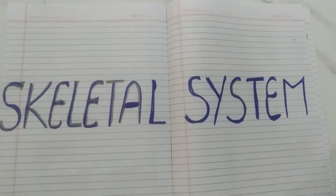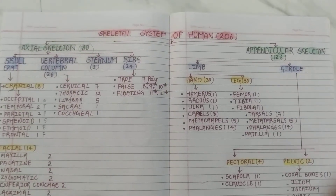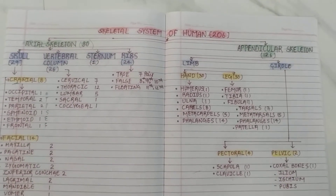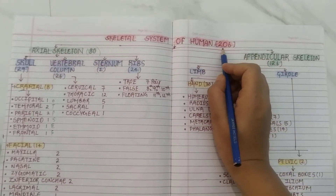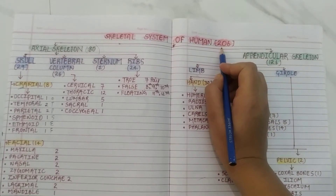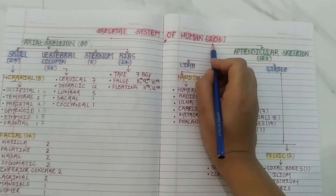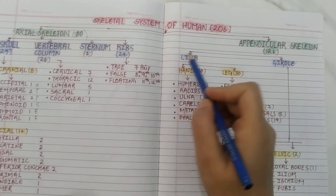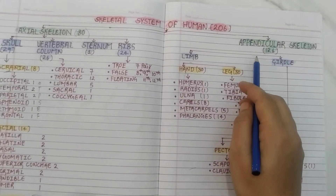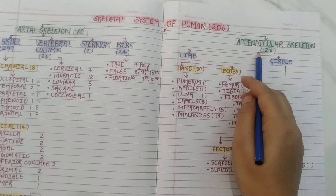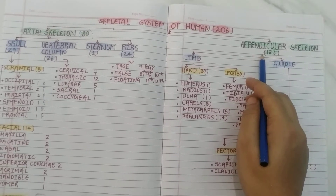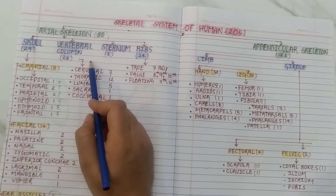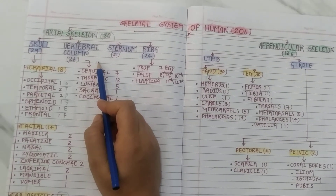In this session we will discuss the bones. I have prepared a chart to make the calculation of bones easy. In the adult human body, there are 206 bones. I have divided the skeletal system into two parts: the axial skeletal system and the appendicular skeletal system. In the appendicular skeletal system there are 126 bones, and in the axial skeletal system there are 80 bones.